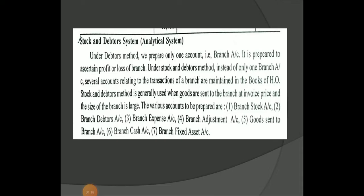The first one is a branch stock account, the second one is a branch debtor account, then branch expenses account, branch adjustment account, goods sent to branch account, branch cash account, and branch fixed asset account. These seven accounts make up the stock debtor system.